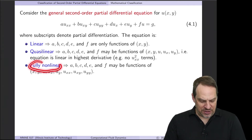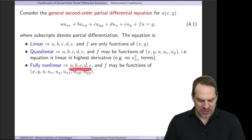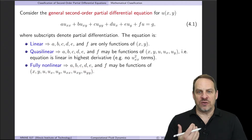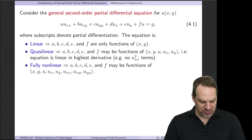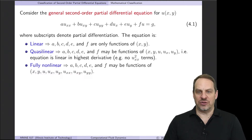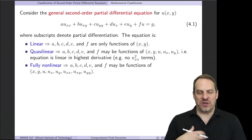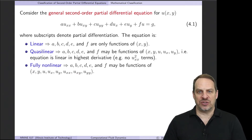It's fully nonlinear if a, b, c, d, e, and f are functions not only of x and y, the independent variables, but also of u and its derivatives — first and second order derivatives. In that case, we'd have a nonlinear partial differential equation.